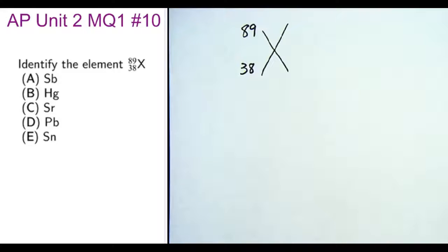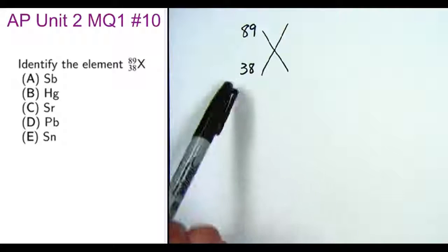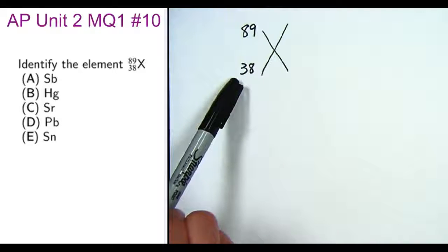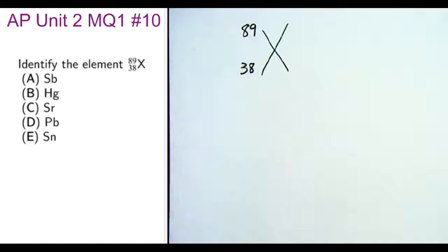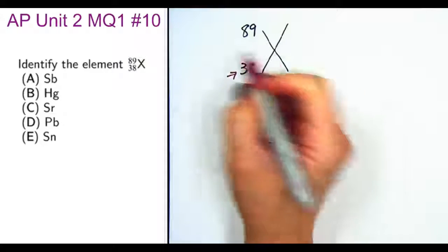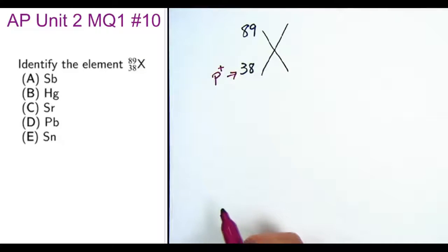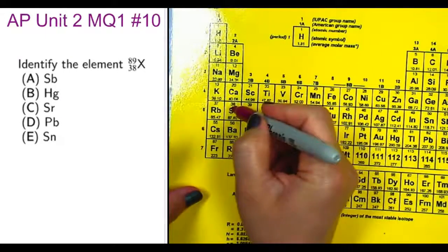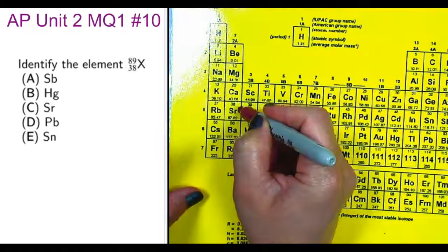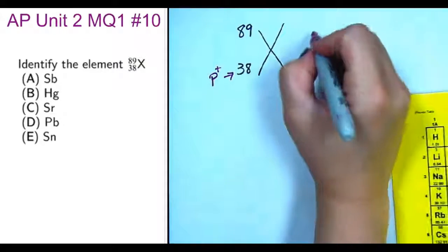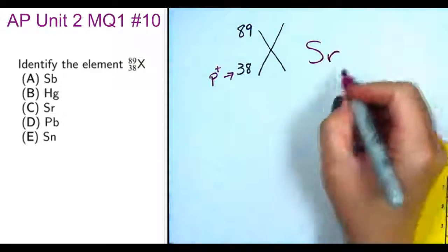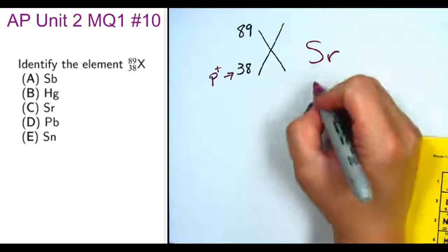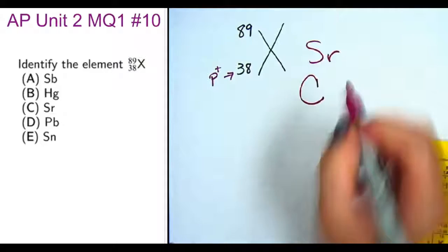We want to identify element X when it has 38 as an atomic number and 89 as a mass number. We only need to focus on the atomic number, which tells us the number of protons, which identifies our element. So we just look for atomic number 38, which is here, and that is strontium. And so we know that this element is strontium, letter C.